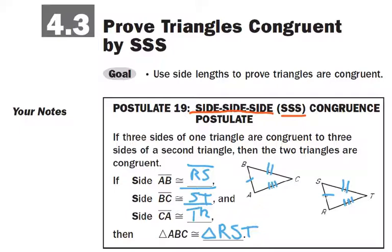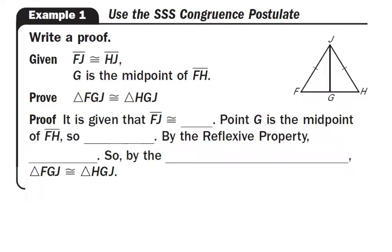That is our first shortcut. We don't have to show anything about the angles — if I can show that three sides of one triangle are congruent to three sides of a second triangle, then I can say the triangles are congruent. You can try that out: take three different-size pencils and make triangles. You might be able to turn it or flip it around, but it will only make one different-size triangle.